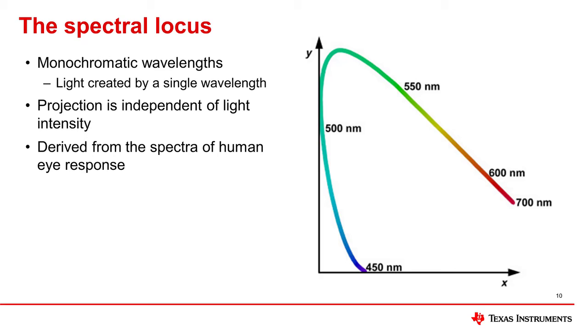The values on the spectral locus are the responses of the human eye across visible wavelengths, with the y-axis plotting relative luminance. Combining different points on the spectral locus creates other, non-monochromatic colors that can be perceived by the human eye. The projection of all these colors is known as color space.